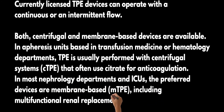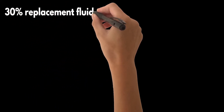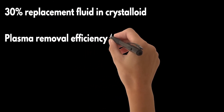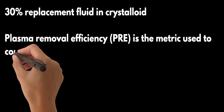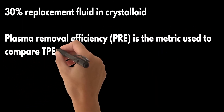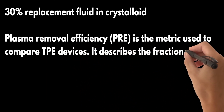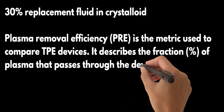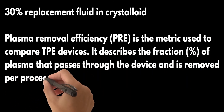To reduce costs and donor exposures, up to 30% of the replacement fluid may be a suitable crystalloid. In low-resource healthcare systems, plasma or crystalloid may be used. Plasma removal efficiency, or PRE, is the metric used to compare TPE devices. It describes the fraction of plasma that passes through the device and is removed per procedure.